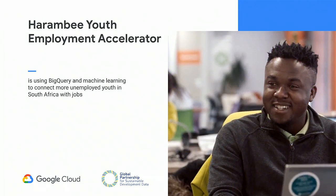Harambe Youth Employment Accelerator is a nonprofit organization based in South Africa. They're using BigQuery and machine learning to connect more unemployed youth in South Africa with jobs. Understanding that the public transportation system in South Africa can be particularly challenging, they're developing a proprietary machine learning job-matching algorithm for entry-level applicants, focused not only on matching them with new positions but also working towards job retention. They recently received a Skoll Social Entrepreneurship Award this year.